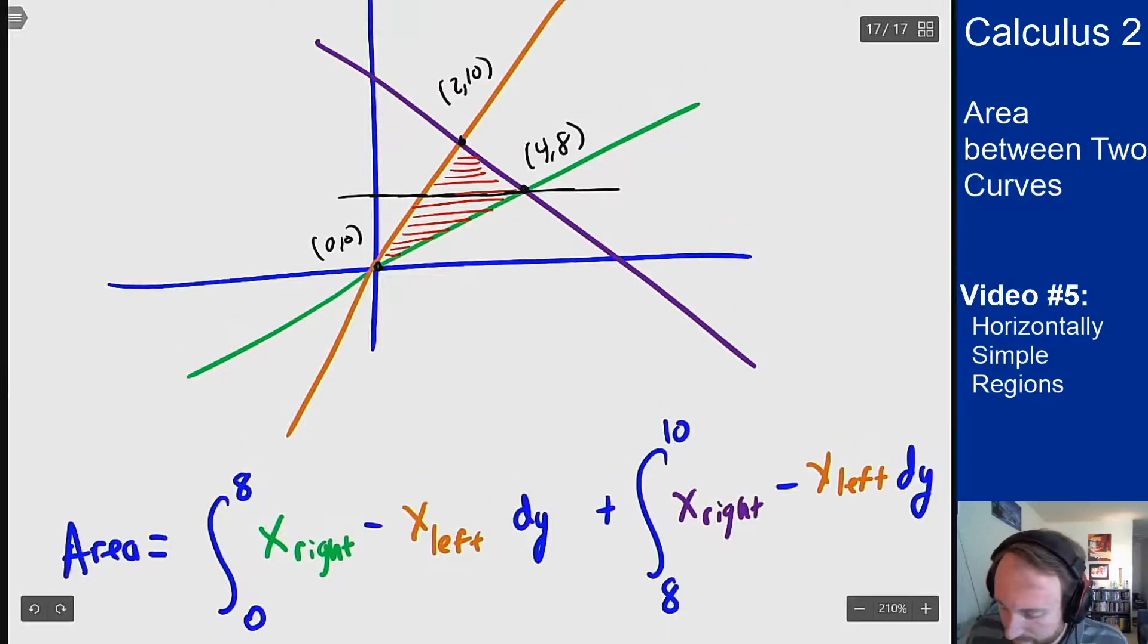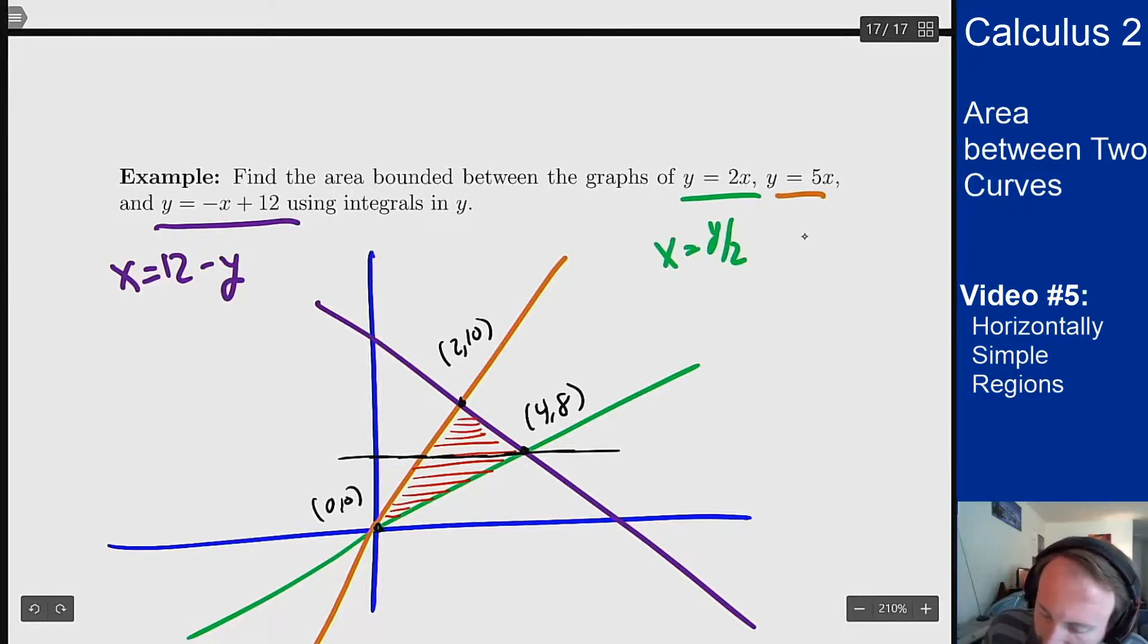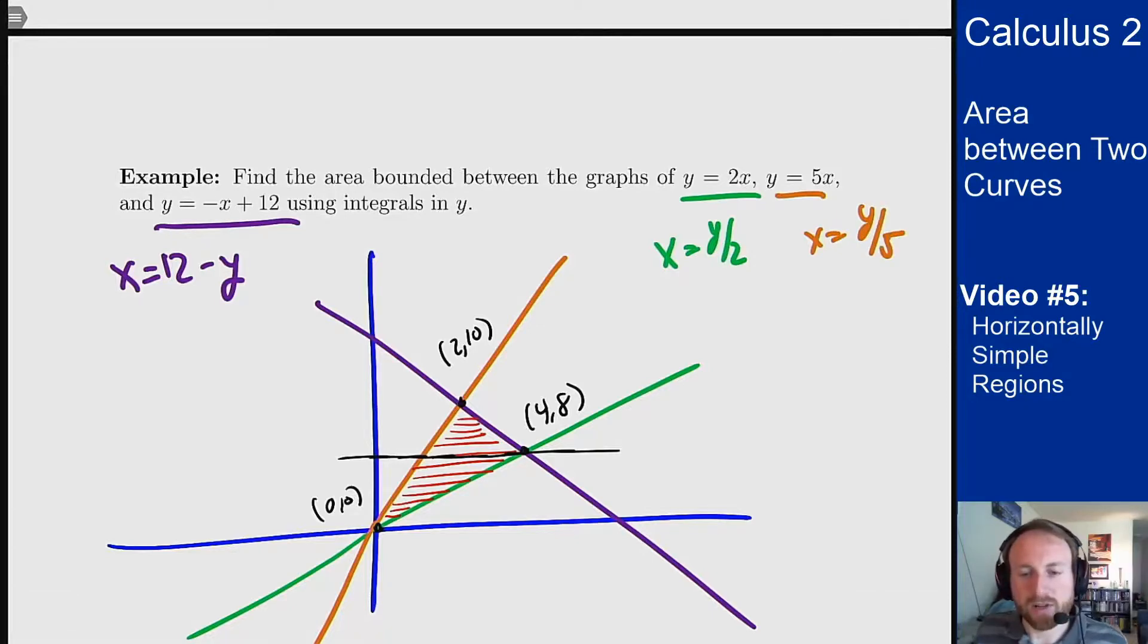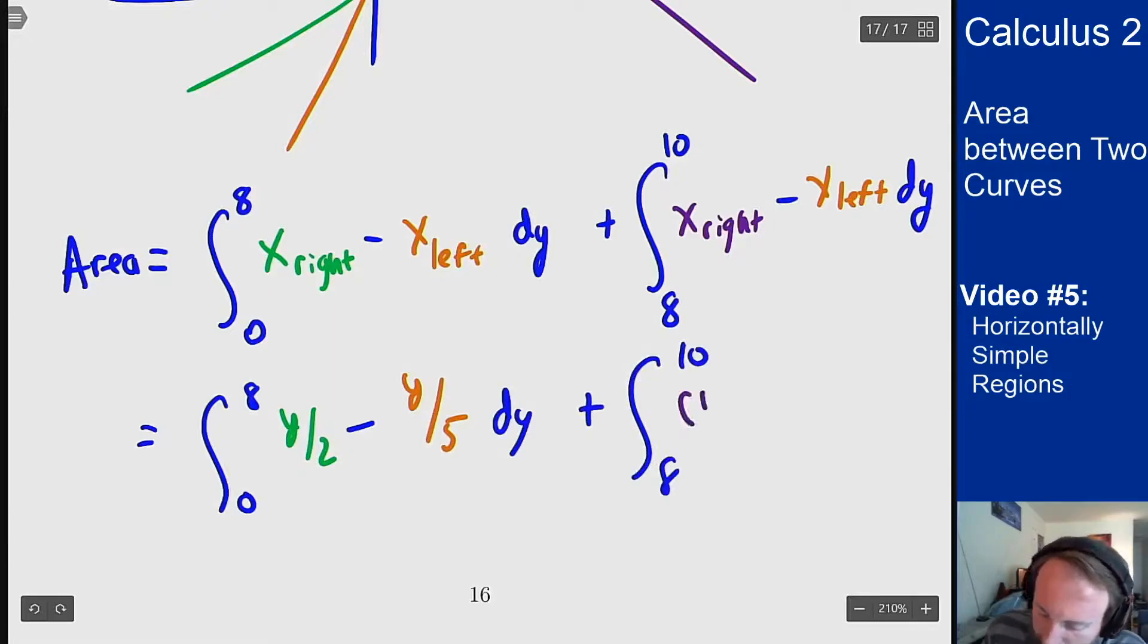Now to figure all of these out what I have to plug in I need to solve out for x in terms of y in each of these functions. So let's go back up and do that. For the purple here I can solve out for x by adding x subtracting y from both sides. So x is 12 minus y. For the green I get that x is y over 2 and then for the orange I get that x equals y over 5. So now I can plug all those into my expressions and then solve out the problem just like I had done before. So my area should be the integral from 0 to 8. For blue we had y over 2 minus the orange which was y over 5 plus integral from 8 to 10. This one which was 12 minus y minus y over 5 again.